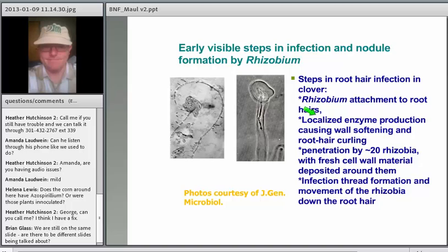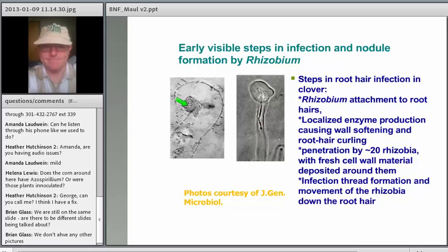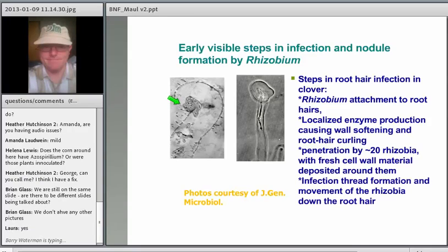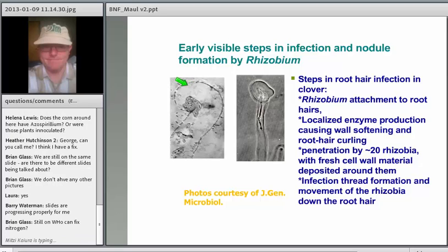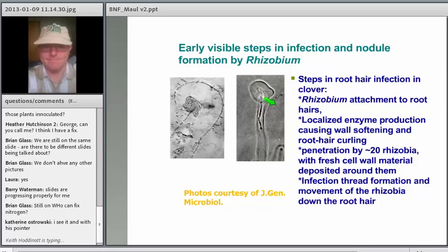Here are some pictures of the steps of nodulation in clover by rhizobium. We have rhizobium attaching to the root hairs — these little dots here. The root hair itself curls around the rhizobium. There's very special enzyme production that causes softening of the cell wall, and then the plant starts to build cell walls inside the root hair, following a path down the root hair.